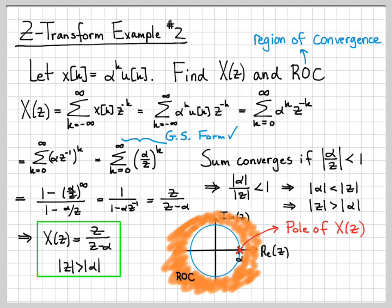In general, this quantity alpha could be anywhere on this circle if we wanted to deal with a complex value of alpha. But in general, the spots where X of Z blows up, and in this case, it's when Z equals alpha, because over here on the denominator, if I plug in Z equals alpha, it blows up.